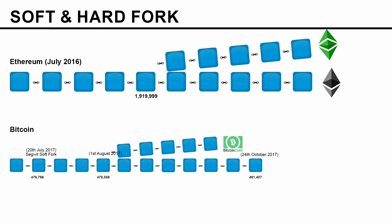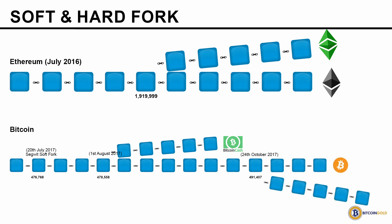Again on 24th October 2017, at block number 491,407, another hard fork occurred. People were unhappy with the ASIC situation, where ASICs — Application Specific Integrated Circuits — are used to mine Bitcoin, making GPU mining redundant. Those unhappy with this wanted to return to GPU mining, and hence the chain split into Bitcoin Gold.